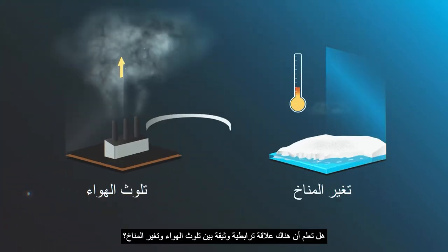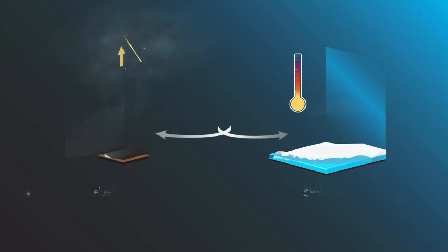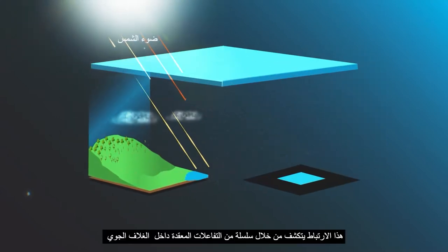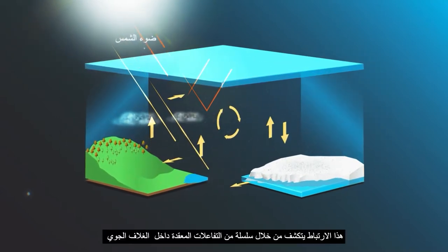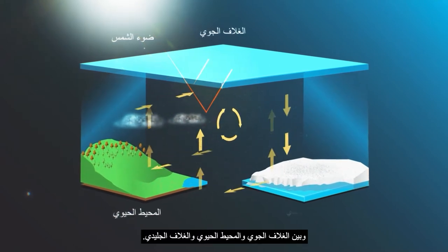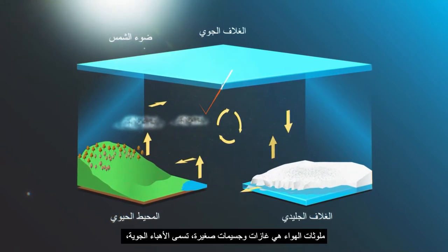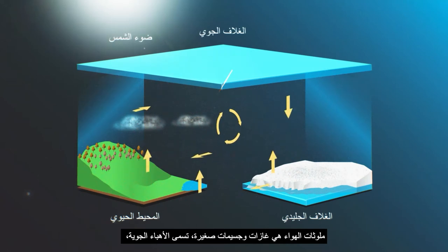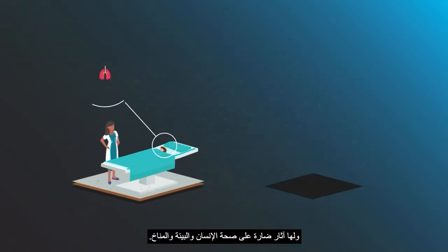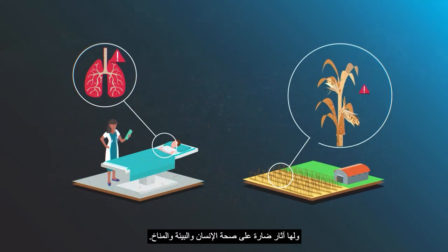Did you know that air pollution and climate change are closely interlinked? This link reveals itself through a series of complex interactions within the atmosphere, and between the atmosphere, the biosphere and the cryosphere. Air pollutants are gases and small particles called aerosols that have detrimental impacts on human health, the environment and the climate.